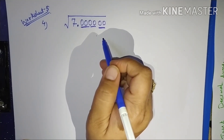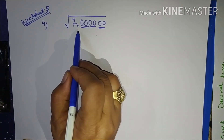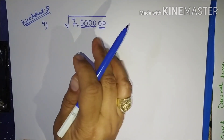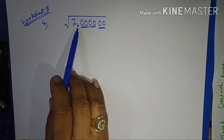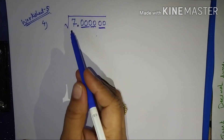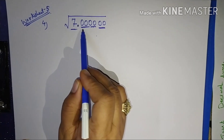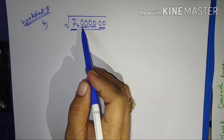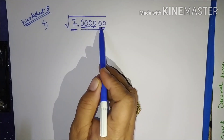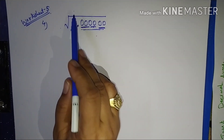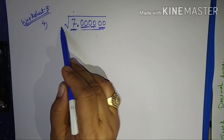The first step was to place zeros in pairs, which we have done. Next is to make the pairing of the number, the same as I told you yesterday. This is the whole part, and this is the decimal part. It is a single digit here. We have already done the pairing.